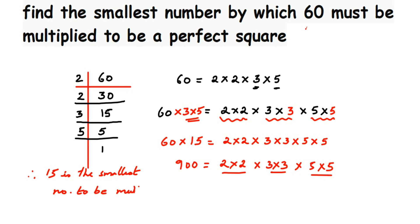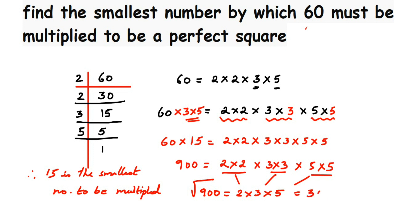We can verify: 60 × 15 = 900, and 900 = 2×2×3×3×5×5 — all proper pairs. If they also ask for the square root, take one factor from each pair: 2×3×5 = 30. So square root of 900 is 30. You can stop at the step where you find 15 as the answer unless the square root is also requested. I hope this question is clear — drop a comment if you have any doubts.